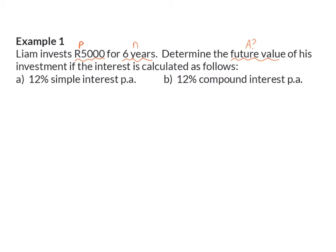In A, we are given that it's 12%, so that will be our I. And then they also mention that it is simple interest, so that means that we will be working with the simple interest formula. In B, it is also 12%, but now compound interest. So, our I is still 12%, but the compound interest means that we are now going to work with our compound interest formula.